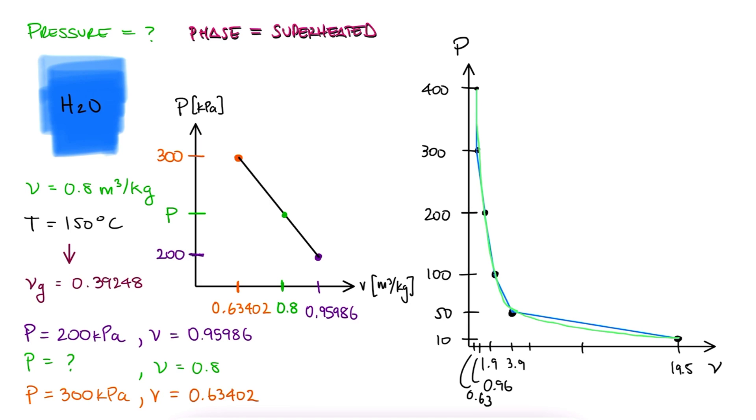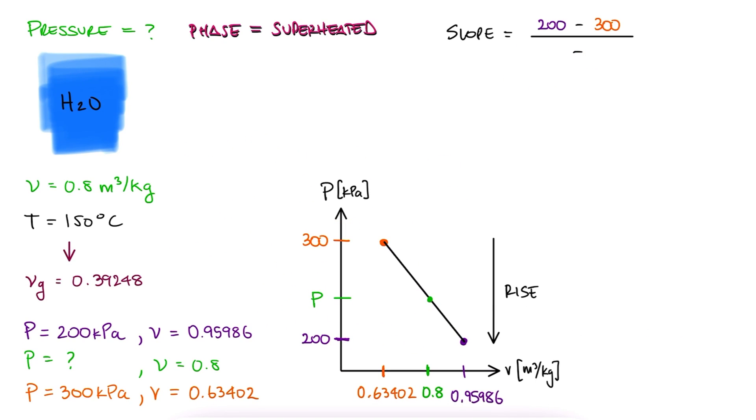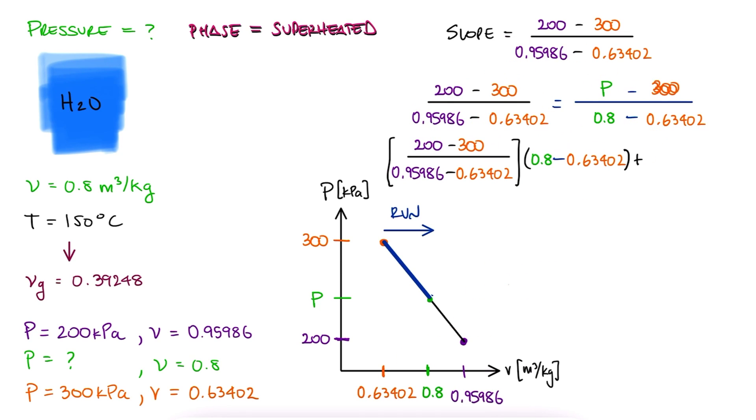Anyways, going back to our interpolation, we know that the slope between the two points in the table is 200 minus 300 over 0.96 minus 0.63. The slope that includes our point of interest would be P minus 300 over our V 0.8 minus 0.63. We solve for P from this equation and find that the pressure is 249 kilopascals.